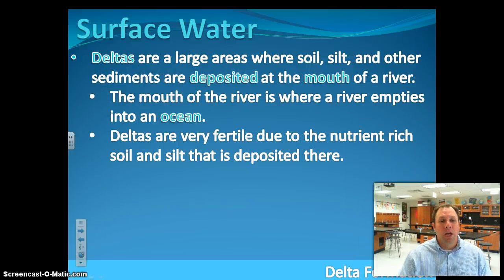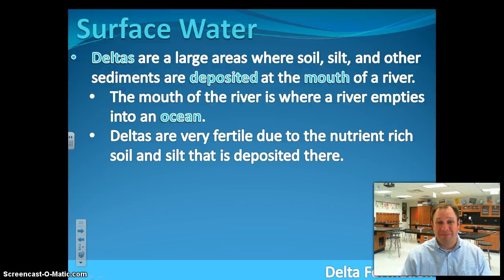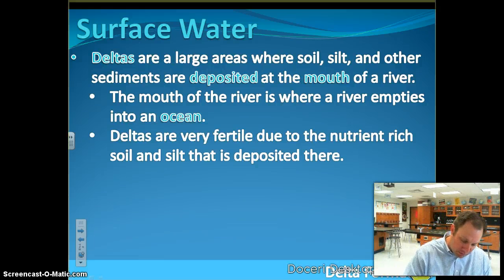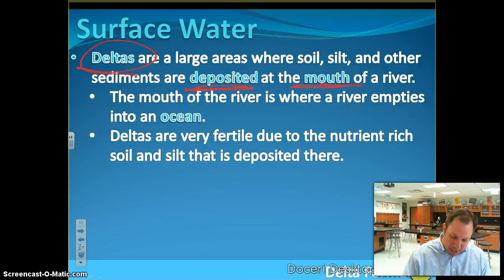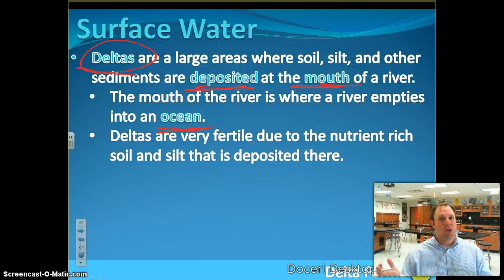We have erosion where rivers and creeks pick up soil and move it, but we also have deposition. Deltas, for example — that's where soil and silt is deposited at the mouth of a river, where a river empties into the ocean. So we have soil and silt picked up and moved by the water, and it's got to be dumped off someplace — and we call that deposition.